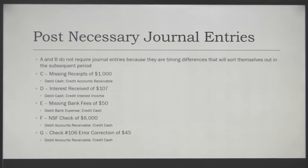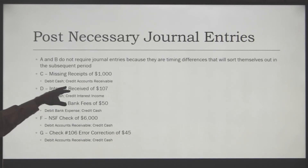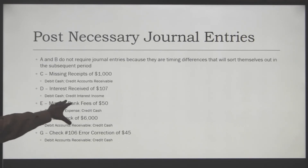When those numbers agree — when you have the bank statement and the cash account detail reconciled — you need to post the necessary journal entries to make sure the cash account balance in the accounting software is correct. Items A and B — the outstanding check and deposit in transit — don't need a journal entry because those are timing differences that will sort themselves out in the subsequent period. Item C, the missing receipts of $1,000: you're going to need to debit cash and credit accounts receivable. For item D, the interest received of $107: debit cash to increase it by $107 and credit interest income on the income statement by the same amount.